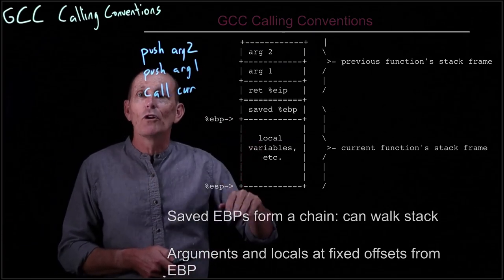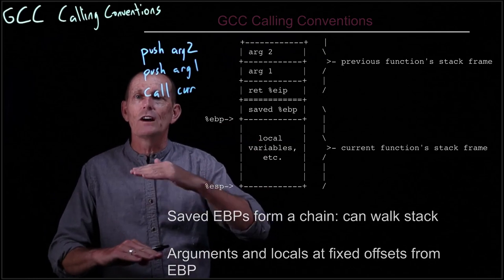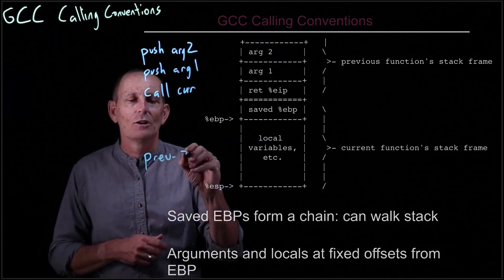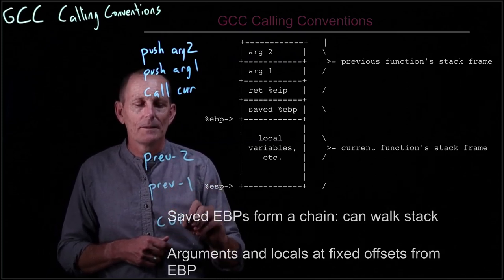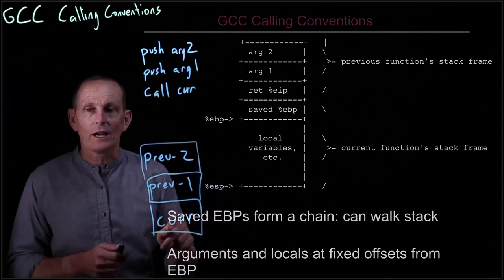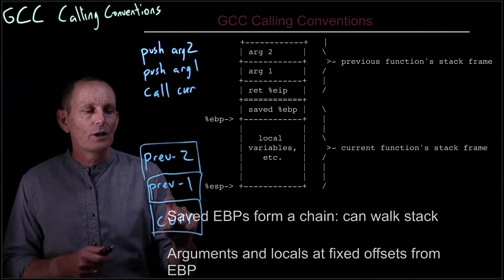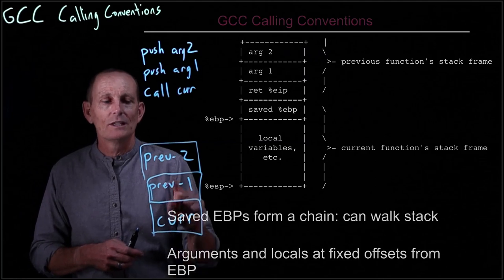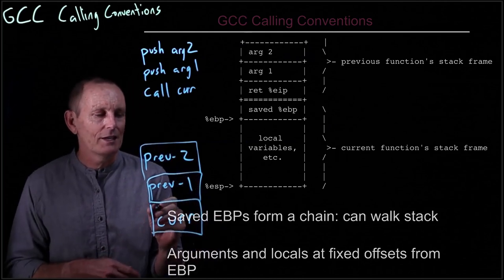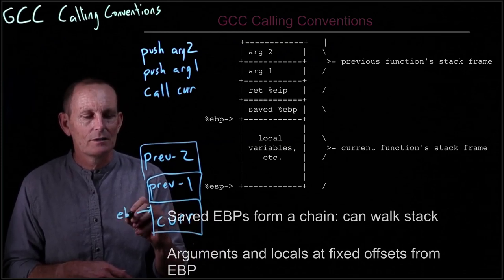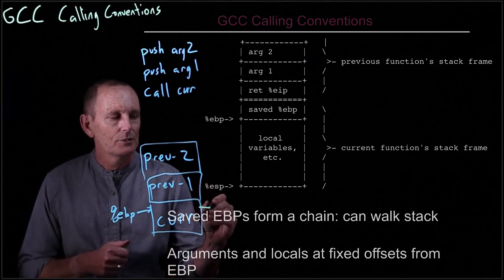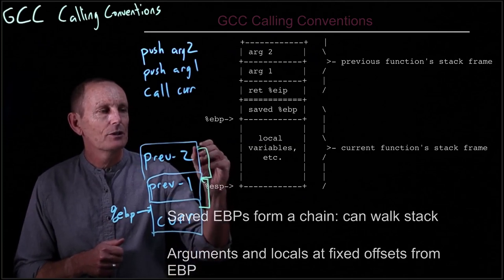These EBPs form a chain of the call stack. So if we've got three functions — PREV-2, PREV-1, and CURRENT — we're looking at the stack frames for each. In the CURRENT stack frame will be local variables; in PREV-1's stack frame will be the parameters passed to CURRENT; in PREV-2's stack frame will be the parameters passed to PREV-1. The EBP is going to point to the previous one, and that's going to point to the previous one and so on.